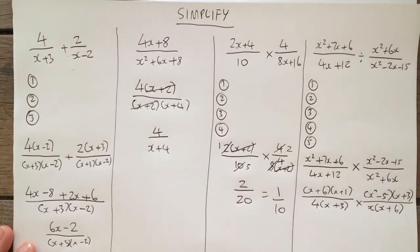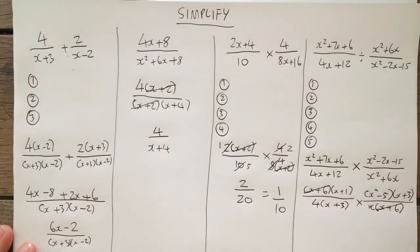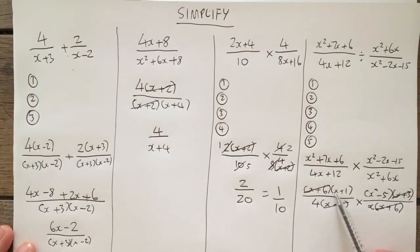Third step, can I cross simplify? x plus 6, x plus 6, yep. So I divide them both by x plus 6. x plus 1, nope. x minus 5, nope. x plus 3, x plus 3, yep. Divide them both by x plus 3.